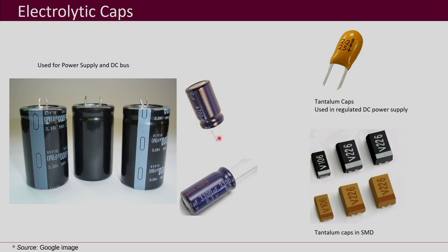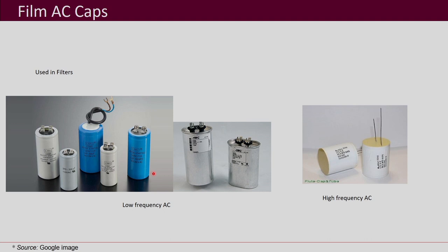Electrolytic capacitors are usually unipolar — one terminal is positive and the other is negative. You cannot connect them in reverse, meaning you cannot apply AC through them; they are mostly not able to withstand that. Film capacitors are used in filter applications and can withstand AC. These are also cylindrical in shape, but usually their capacitance value is much less than what you get in an electrolytic capacitor for the same size.